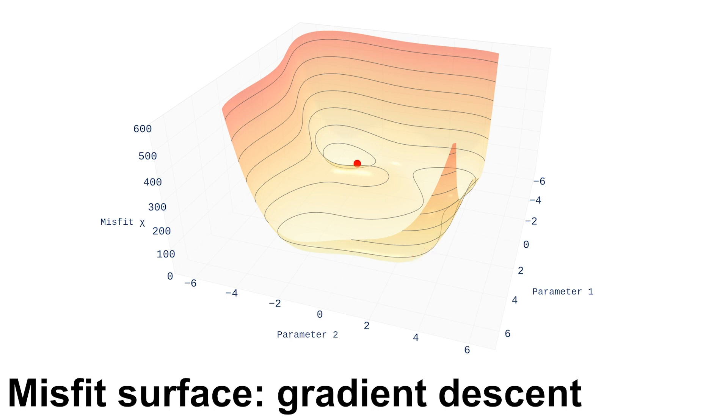Minimization algorithms start at some model. In this animation, the red dot. Then it uses the gradients to optimize this model. A single descent is one trajectory in this animation. We show a few of these. At the end of a descent we have found an optimal model.